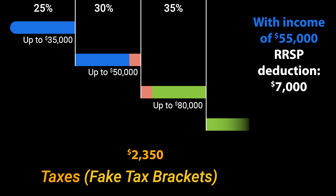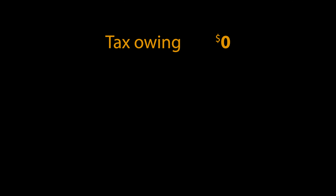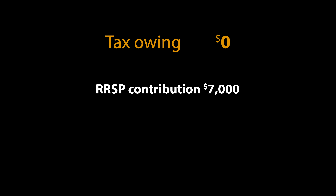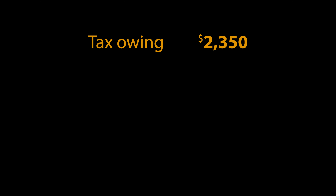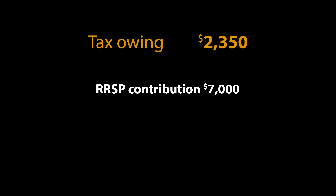So in total, that's $2,350 in tax savings. On your return, if you were getting a nil refund before the RRSP contributions, you'd now expect a refund of $2,350. Conversely, if you owed $2,350 before making these contributions, it would bring your balance down to zero.